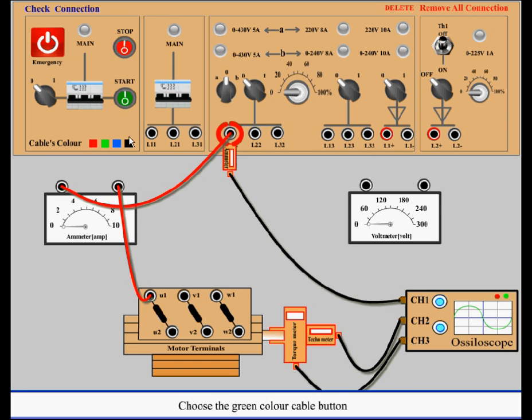Choose the green color cable button. Connect L22 to V1. Connect L22 to one terminal of the ammeter.